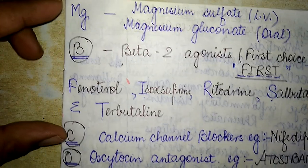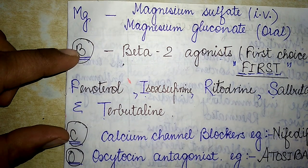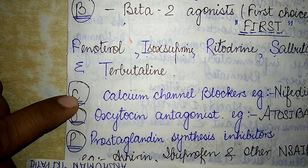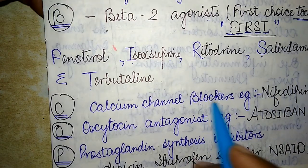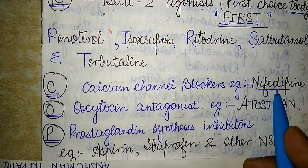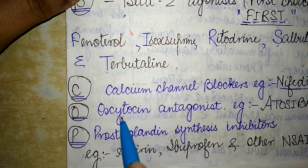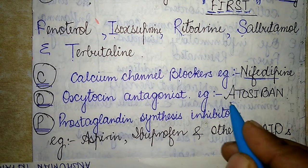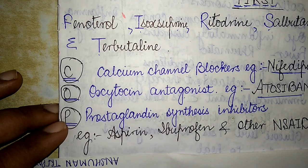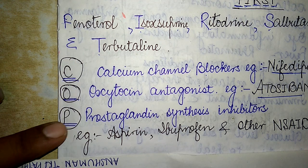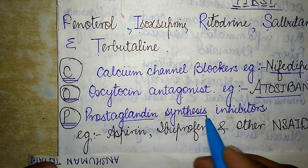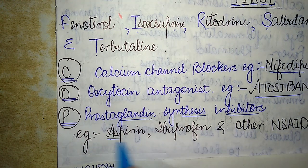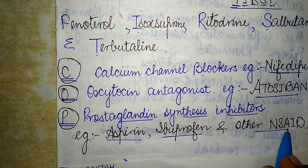Moving on in the mnemonic 'Magnesium Blocks Contractions Of Pregnant Uterus': C of 'Contractions' refers to Calcium Channel Blockers, with Nifedipine as the famous example. O refers to Oxytocin Antagonists, with Atosiban as the well-known example. P of 'Pregnant' refers to Prostaglandin Synthesis Inhibitors.